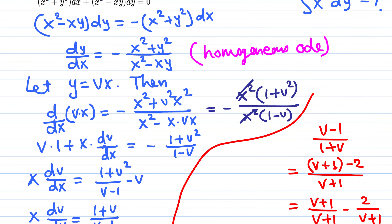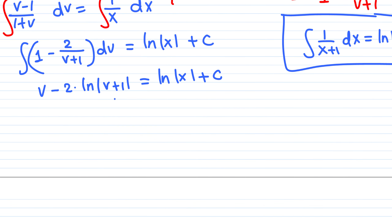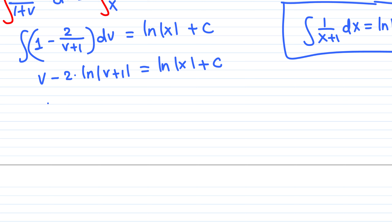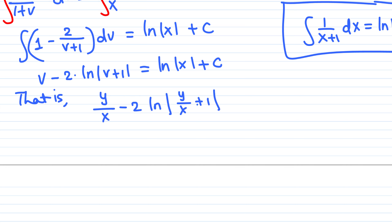Since we assumed y equals vx, we have v equals y over x. Substituting back: y over x minus two times natural log of y over x plus one equals natural log of x plus C. Solving explicitly for y is almost impossible here, so we leave this as the solution in implicit form.